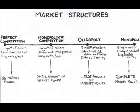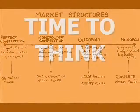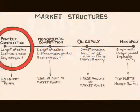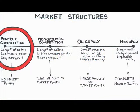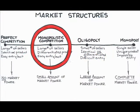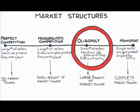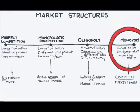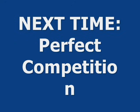Now that you know something about each market, here's an exercise: see if you can come up with real-world examples for each type. What kind of product or products would fit the perfectly competitive structure? What about monopolistically competitive? Oligopolistic? Monopolistic? Have your answers ready, because I'll be asking for your responses in our next class. Next time: perfect competition.